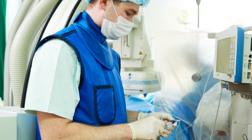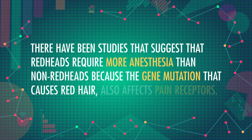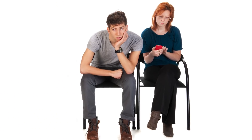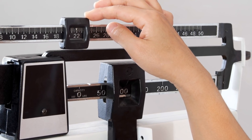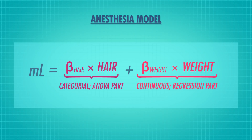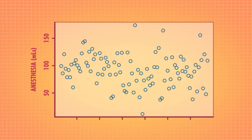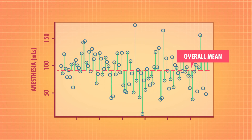For example, we might want to look at the amount of general anesthesia needed to put a patient under. There have been studies suggesting that redheads require more anesthesia than non-redheads, because the gene mutation that causes red hair also affects pain receptors. So we have two groups — redheads and non-redheads — which are categorical variables. But we also think that weight will have a meaningful impact on the amount of anesthetic needed for surgery. Weight is a continuous variable. We collect data on 100 randomly selected patients, 50 redheads and 50 non-redheads, recording their weight, natural hair color, and the amount of anesthesia needed during their appendix removal surgery. We can now build a model to predict milliliters of anesthesia based on hair color and weight. Like its friends Regression and ANOVA, ANCOVA looks at the overall variation in the data and uses different variables to explain it.